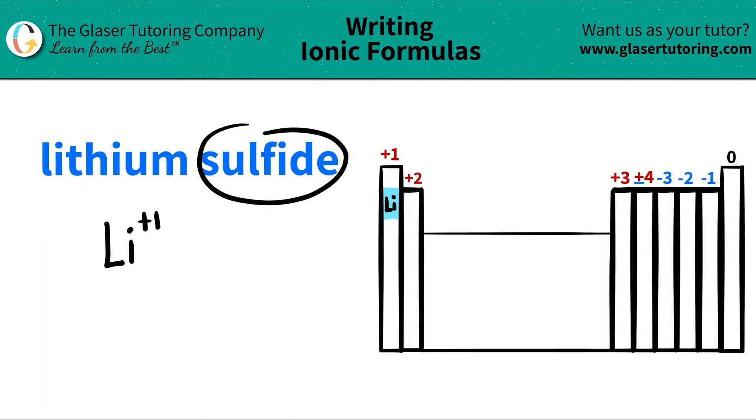The next thing that I see is I have sulfide. It's an IDE ending, which means that chances are it's going to be a non-metal. So this had to be sulfur. And if I scan the periodic table, sulfur is over here. Sulfur is represented as an S and it's in this group that always has a negative two trend of oxidation state. So I'm just going to write that I have S with a negative two.